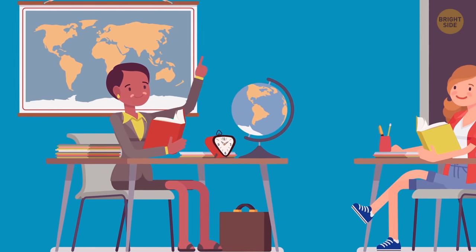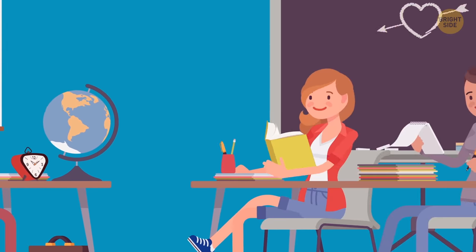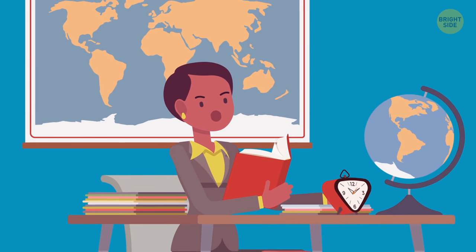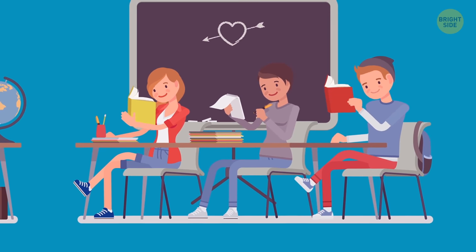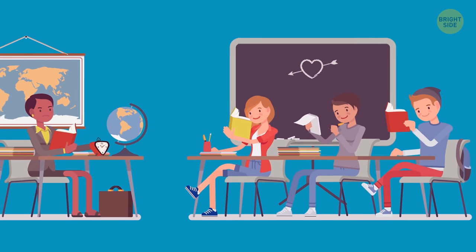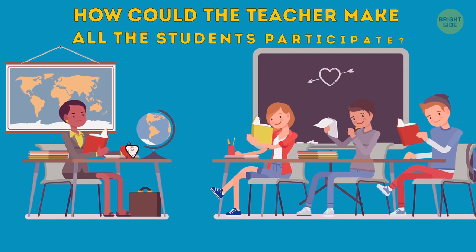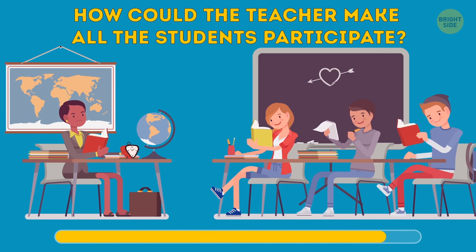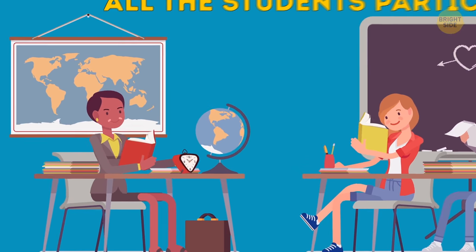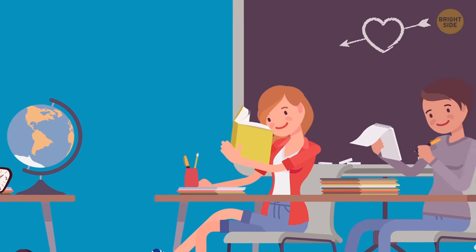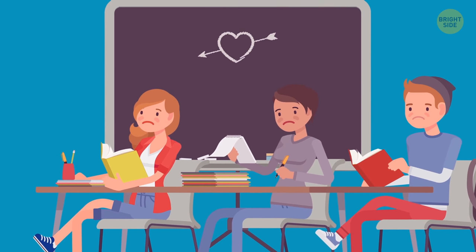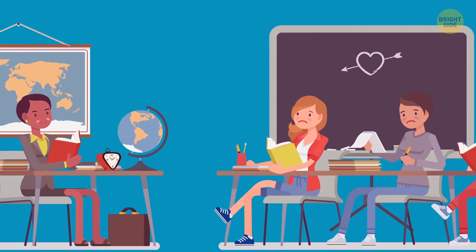One day, a teacher decided to give her students a test. But all of them refused to take it. She could give detention for skipping the test to only one student. All of them knew each other's names. If the student knew they were going to get detention, they agreed to take the test. How could the teacher make all the students participate? She told them that she'd give detention to the student whose name came first alphabetically. Then this person wouldn't skip the test. The next person on the list wouldn't skip as well. And so on until the end of the list.